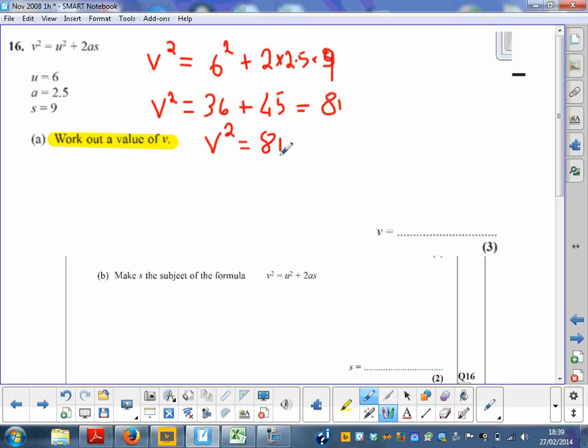But I want to find out v. In this case obviously I have to do the square root to find out the value. The square root of 81 is 9. So v is equal to 9.